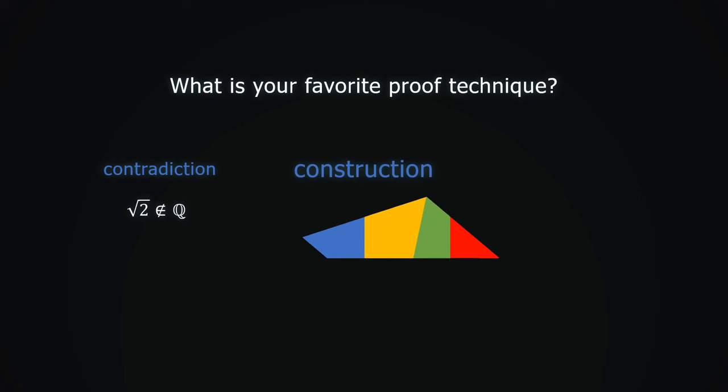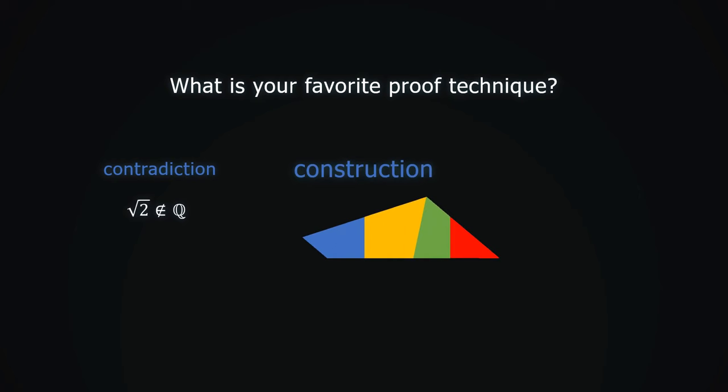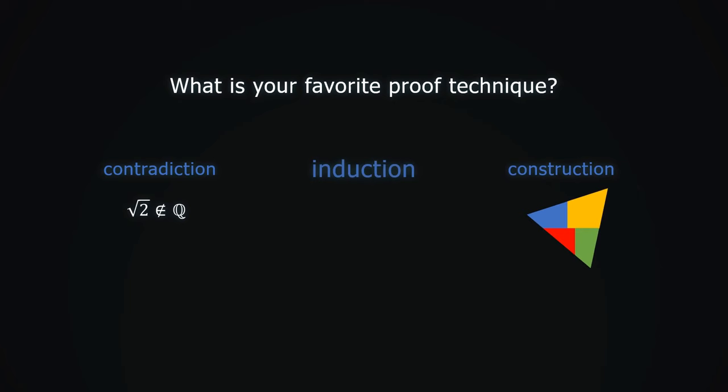Or is it constructive proof, where you not only prove the solution exists, but also find the solution itself? Maybe it's proof by induction, where you exploit the structure of natural numbers.